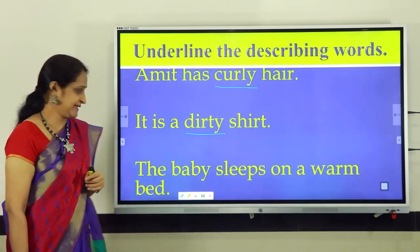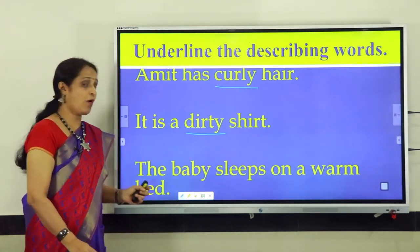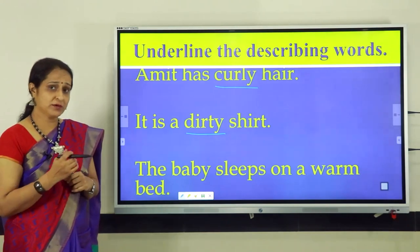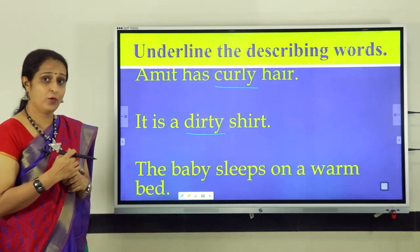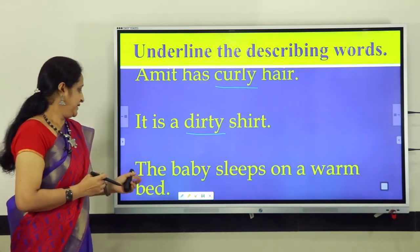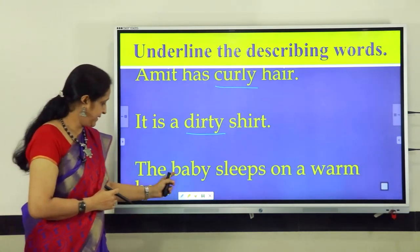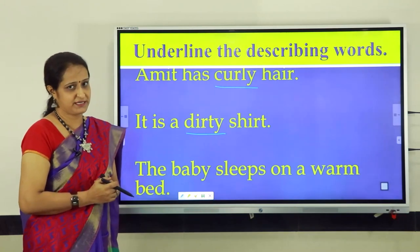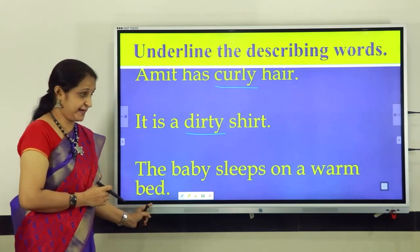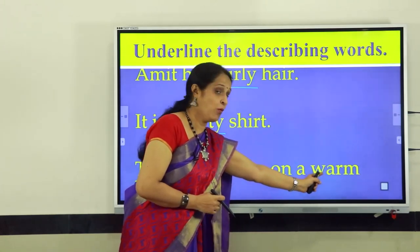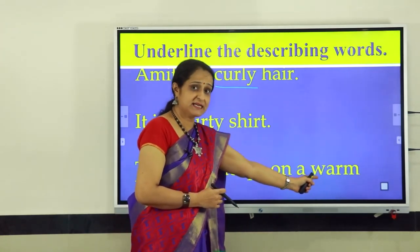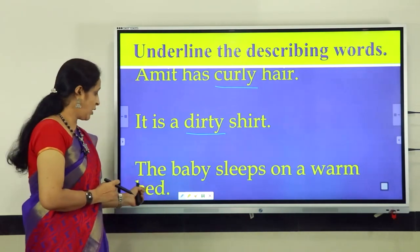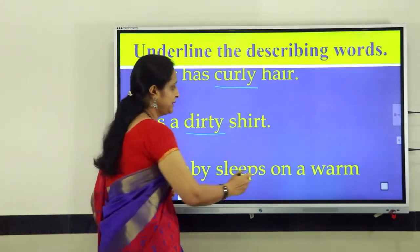Let us move to the next sentence: The baby sleeps on a warm bed. Here, let us find out what is the describing word and then underline it. We have two nouns: baby and bed. Baby does not have a describing word here. But the noun bed has a describing word: warm. Warm tells us about the bed, so warm is a describing word for the noun bed. Let us underline the describing word warm.